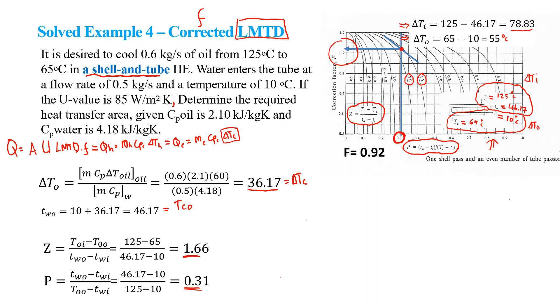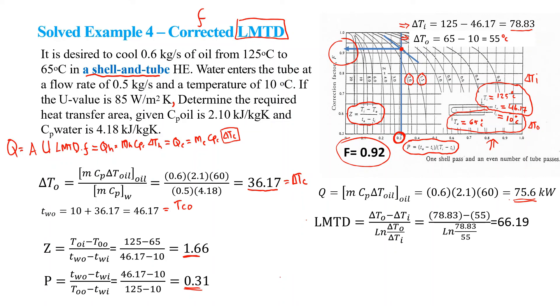Since what they ask is heat transfer area, we need to find out Q. Q equals, in this case we use the oil, so we find it's 75,600 watts. Next, we calculate the LMTD given the equation here, and we find out the value of 66.19. Finally, using this equation, we can find out the area.